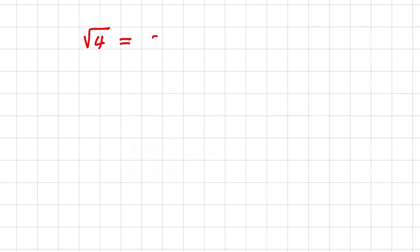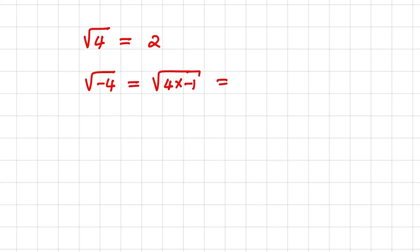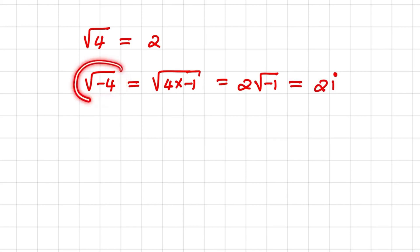Now let us consider other applications of i. The square root of 4 equals 2. But the square root of negative 4 equals the square root of 4 times negative 1. We can split the square root into two parts: the square root of 4 equals 2, times the square root of negative 1, and that equals 2i.